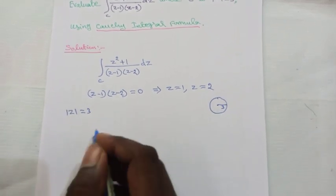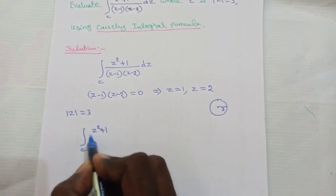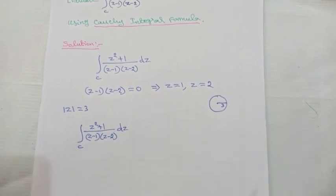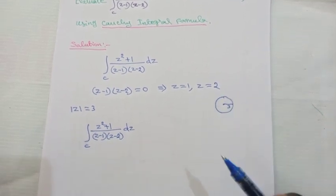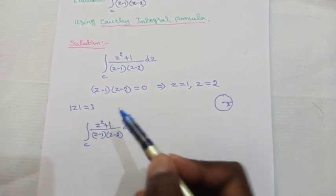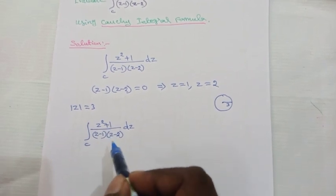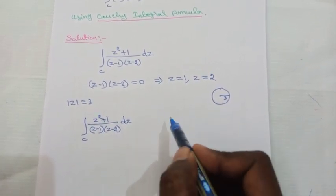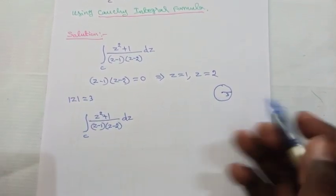Now, the given integral is ∫_c (z² + 1) / [(z - 1)(z - 2)] dz. Since both singular points lie inside the circle c, if any one had lain outside we could take that factor to the numerator. But here both points lie inside the circle, so we need to split it into two integrals.